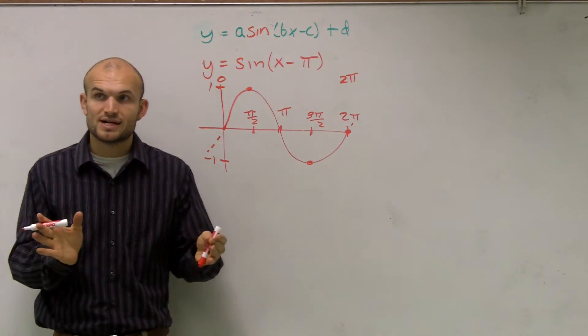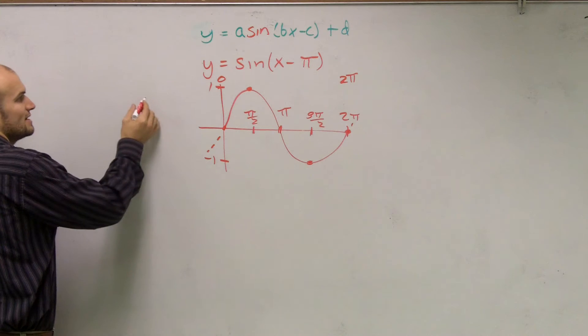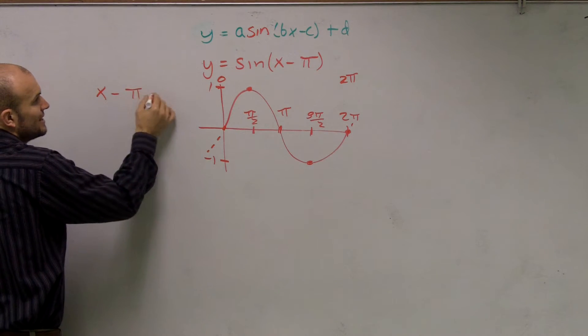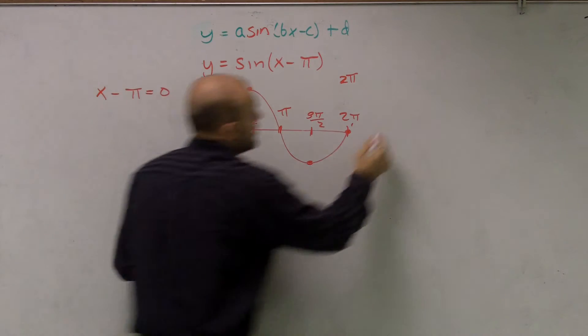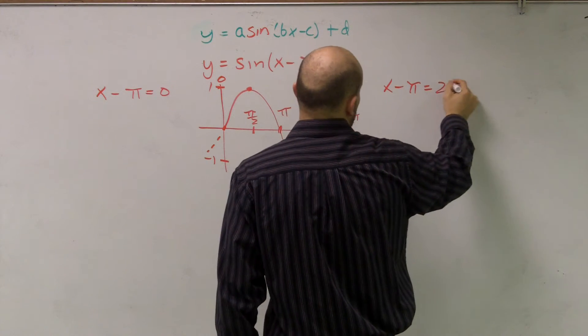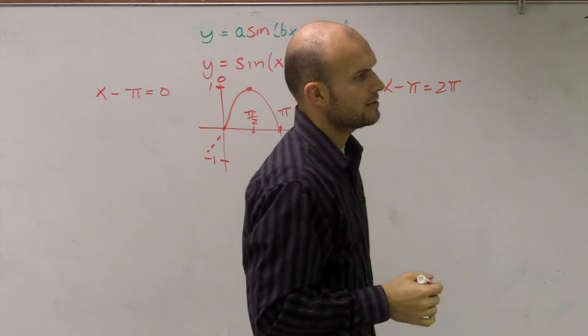So what you can do, whenever you're given a horizontal translation, you want to take whatever's inside your function, so x minus π is equal to 0, and then do x minus π is equal to 2π. Okay.